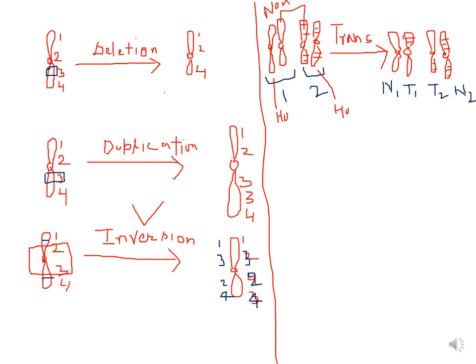In duplication, gene number three becomes duplicated — there are now two copies of gene number three. The chromosome with duplication is longer than the original chromosome.